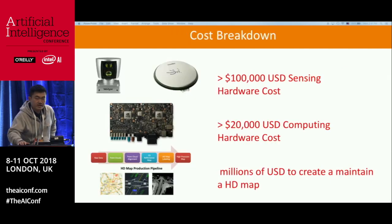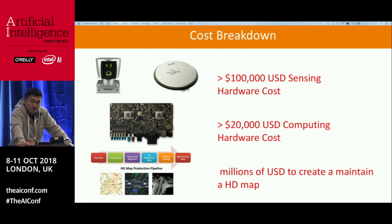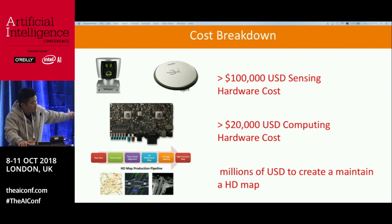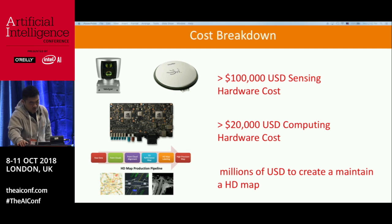Let's do a quick cost breakdown for today's autonomous vehicle. Starting with sensors: an $80,000 LiDAR plus a $10,000 GPS means sensors alone cost more than $100,000. For computing hardware, the first generation I worked on at Baidu's autonomous driving project cost about $30,000 — basically two servers jammed into the car. Even today, a NVIDIA PX2 is $20,000. Plus the map, whose cost is still an open question. Demo cars like Google's Waymo cost around $300,000 to $500,000 — still too expensive to ship.